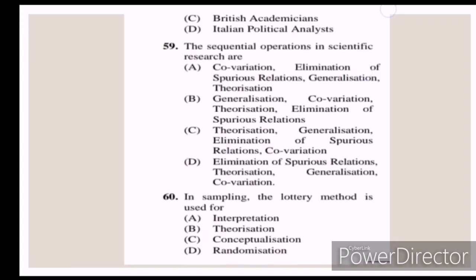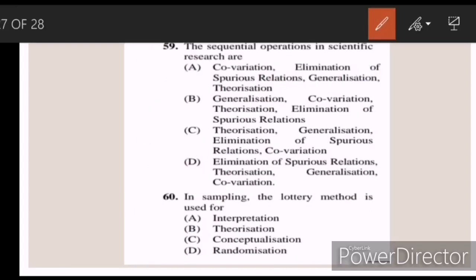Fifty-nine: the sequential operations in scientific research are — Answer A. Sixty: in sampling, the lottery method is used for — Answer D — randomization.